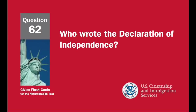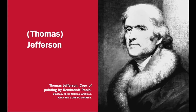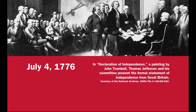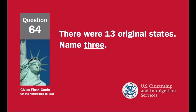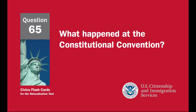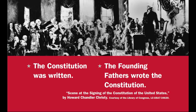Who wrote the Declaration of Independence? Thomas Jefferson. When was the Declaration of Independence adopted? July 4th, 1776. There were 13 original states — name three: New Hampshire, Rhode Island, Connecticut, New York, New Jersey, Pennsylvania, Delaware, Maryland, Virginia, North Carolina, South Carolina, Georgia. What happened at the Constitutional Convention? The Constitution was written. The Founding Fathers wrote the Constitution.